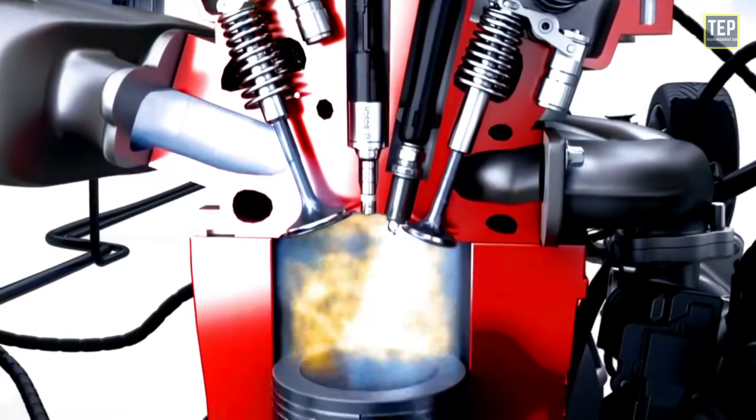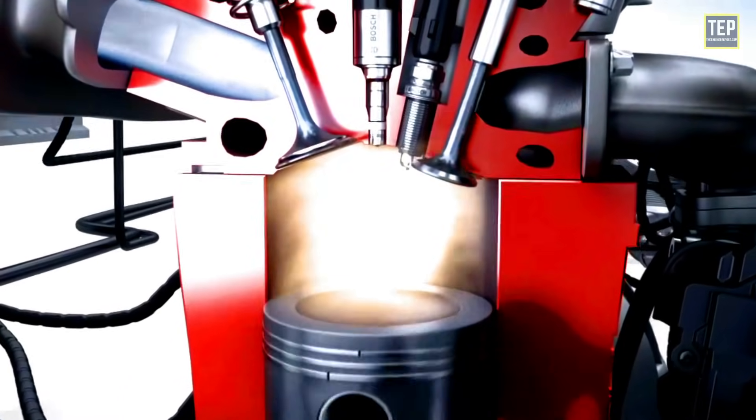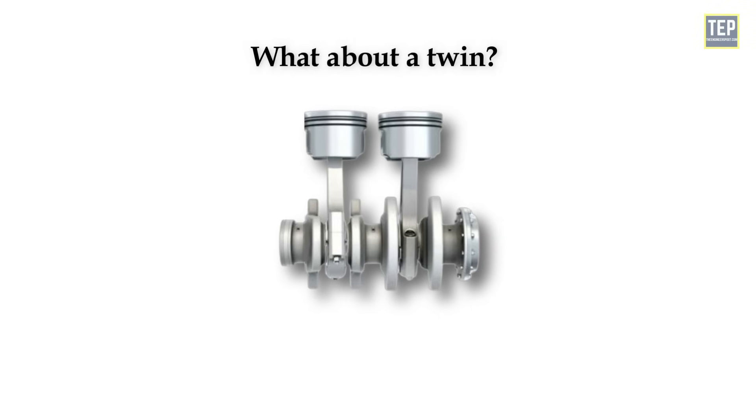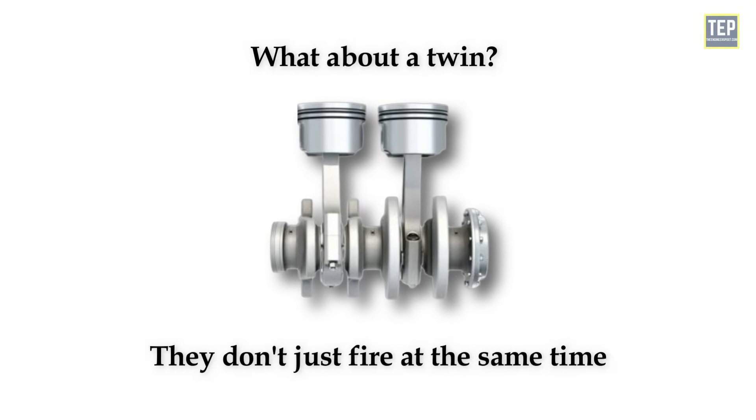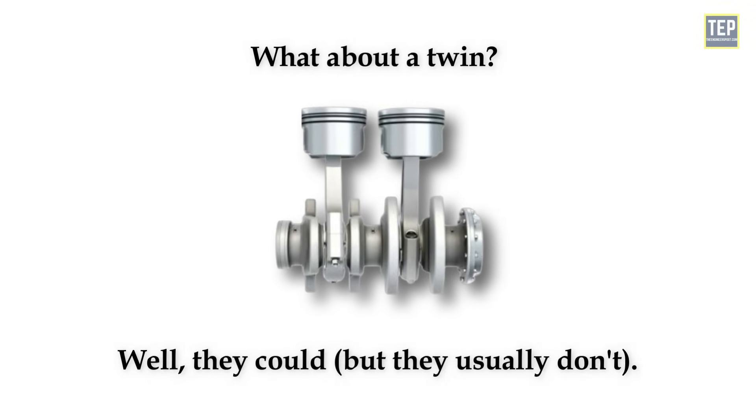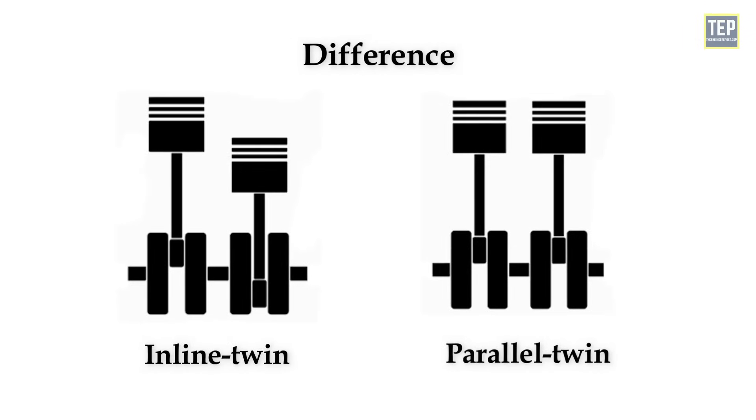So in a single-cylinder engine, the engine rotates twice every time the cylinder fires. But what about a twin? They surely don't fire at the same time? Well, they could, but they usually don't. Before that, let's understand the difference between inline and parallel twin engines.